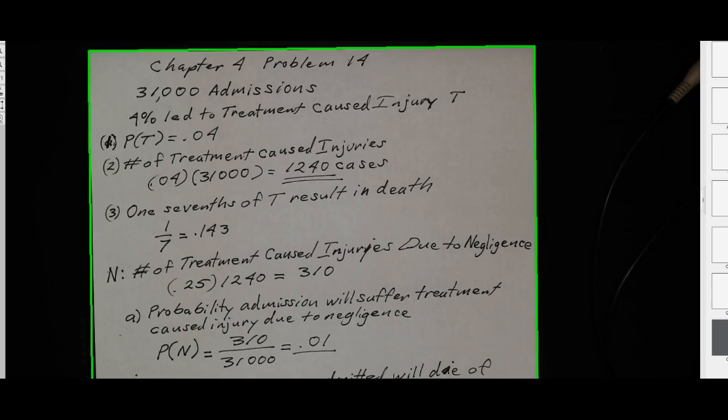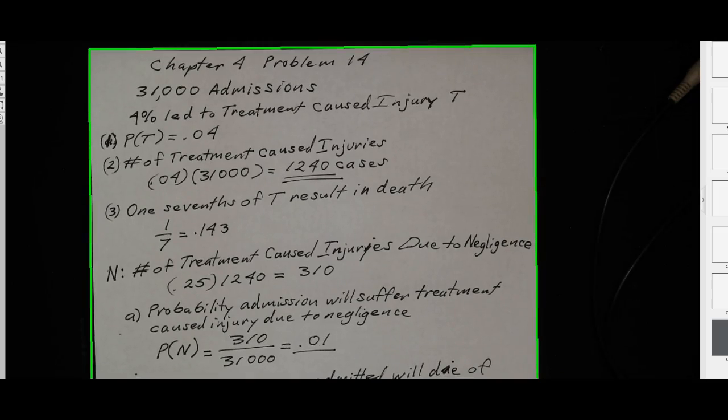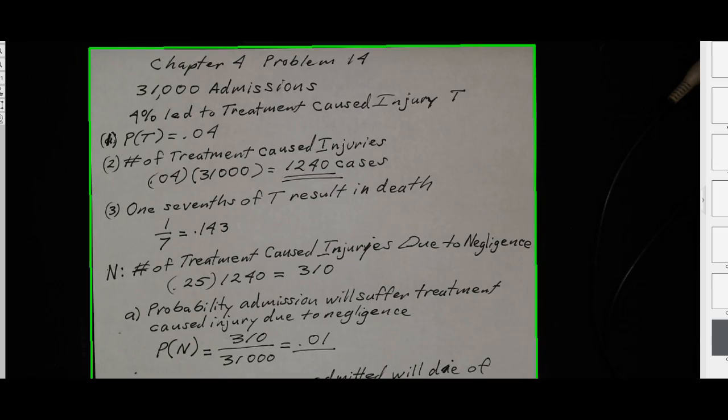So the first question they ask is the probability that the admission will suffer a treatment caused injury due to negligence. I actually calculated that using the values 310 over 31,000, or 0.01, which is the answer to part A.